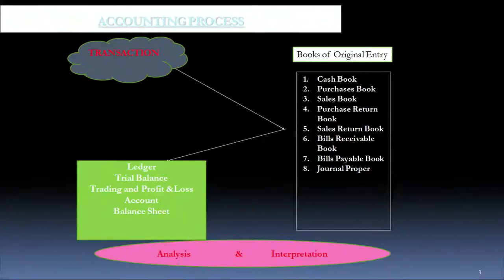Thereafter you went on to make your financial statements — namely the trading account, profit and loss account, and your balance sheet. You also made a manufacturing account if you had a manufacturing unit. Now we are at the end of the accounting cycle, and we need to analyze and interpret the results of a firm, the results of a business unit.